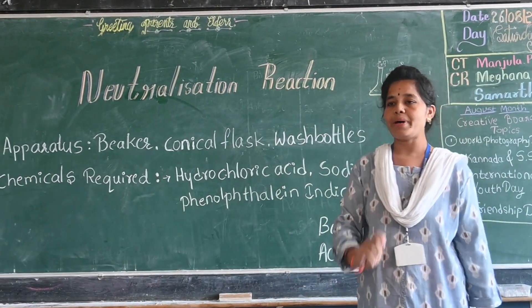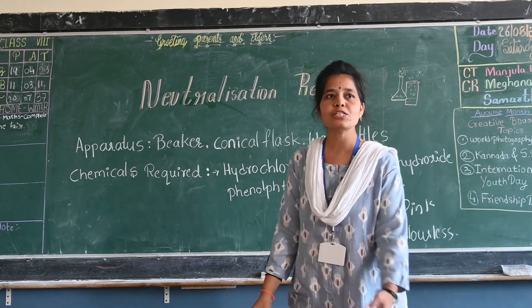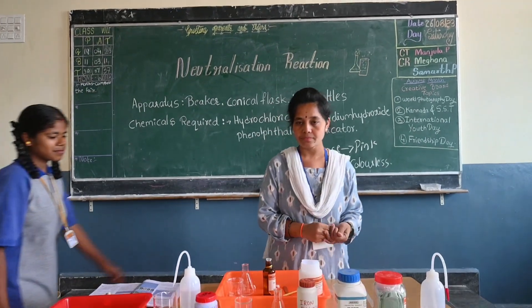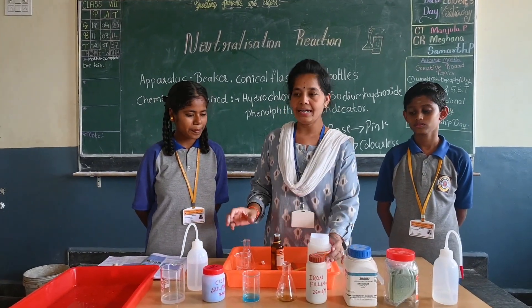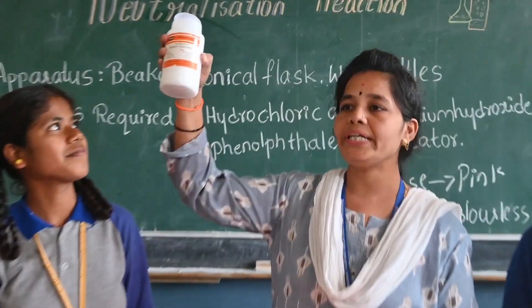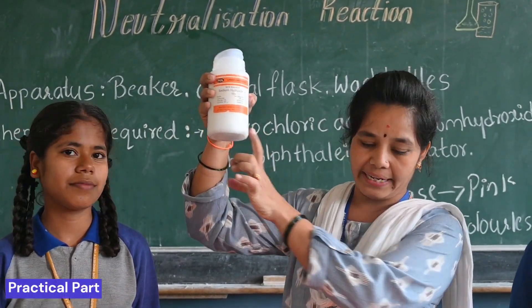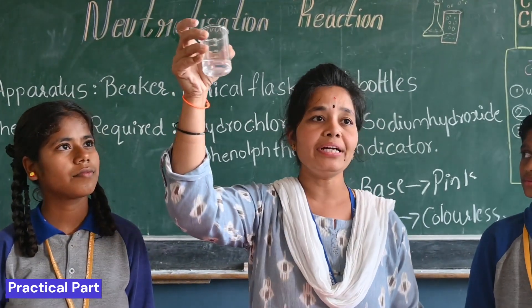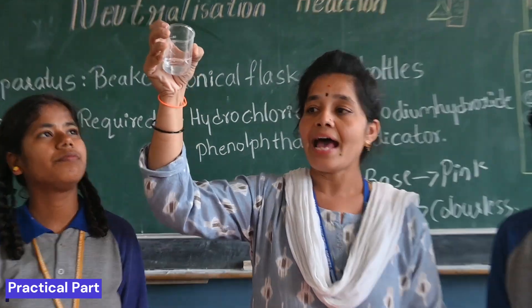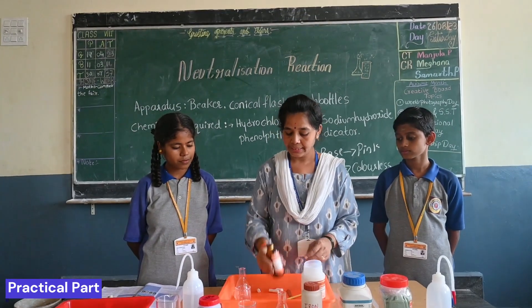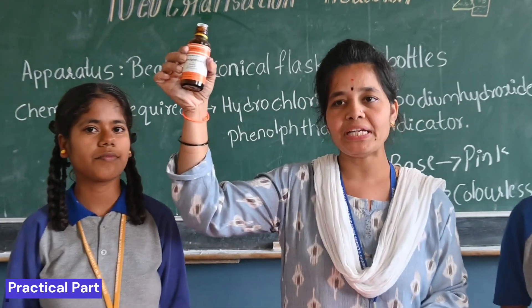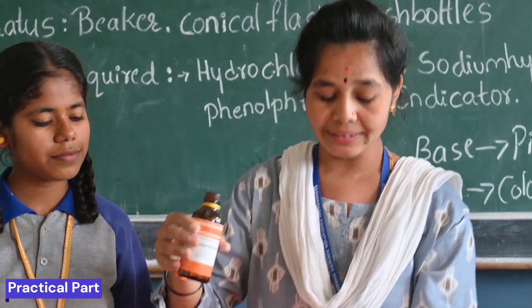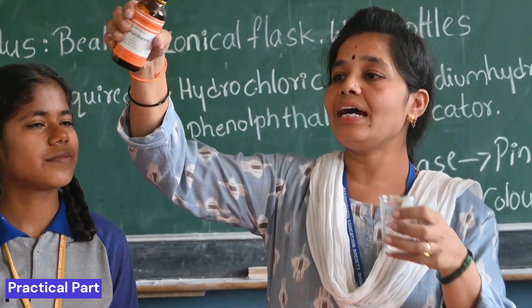Let us confirm this through an experiment. Come here. This is sodium hydroxide — it is a base. And this is hydrochloric acid. And this is phenolphthalein indicator. It is basically colorless — you can see the color of the phenolphthalein is colorless.